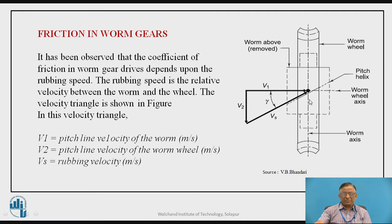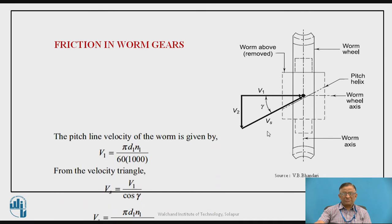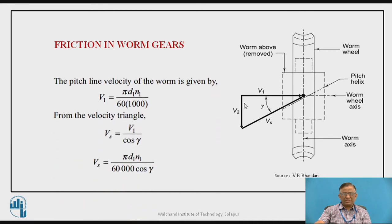The rubbing speed is the relative velocity between the worm and worm wheel. Here we consider a velocity triangle from which we can find out the rubbing velocity Vs, if we know the peripheral velocity of the worm and peripheral velocity of the worm wheel. Considering this velocity triangle, we can establish the rubbing velocity. The rubbing velocity Vs is equal to Vw divided by cos gamma, where gamma is the lead angle.